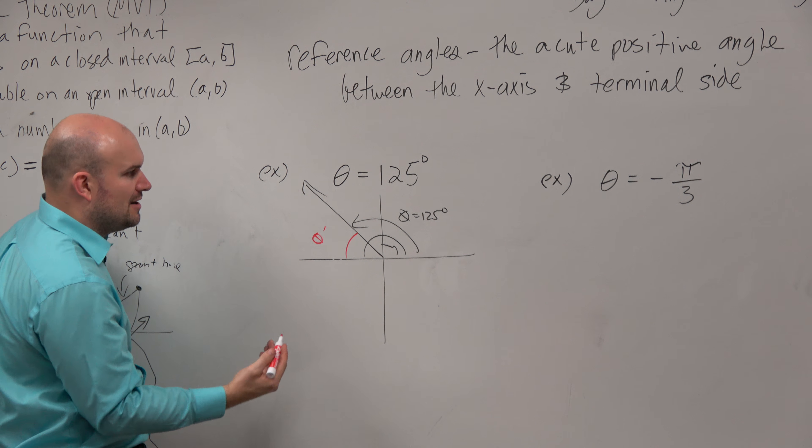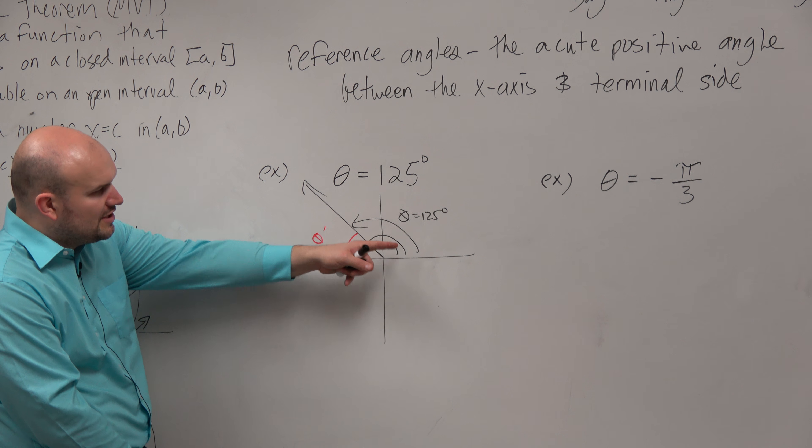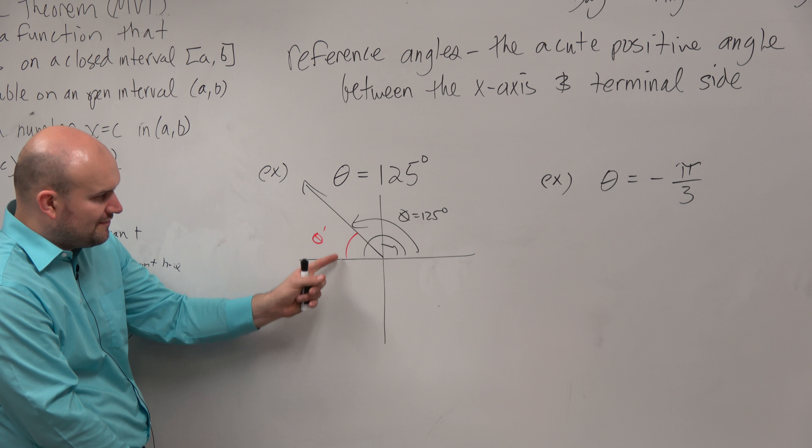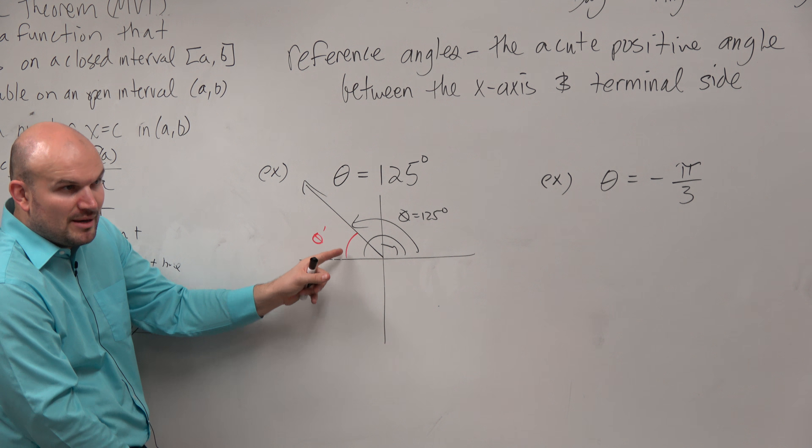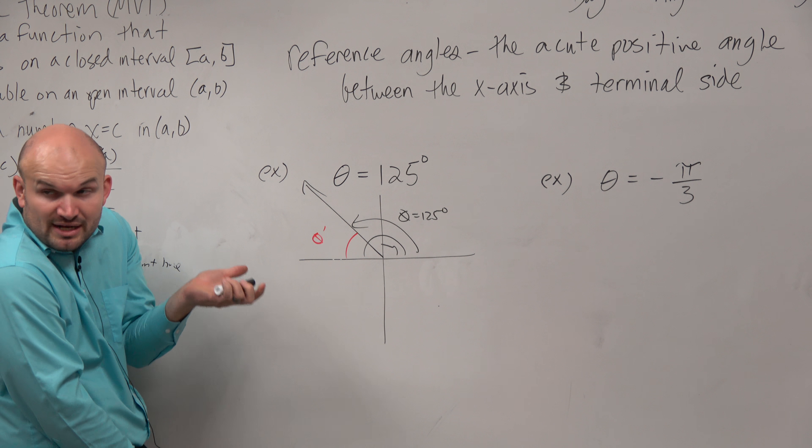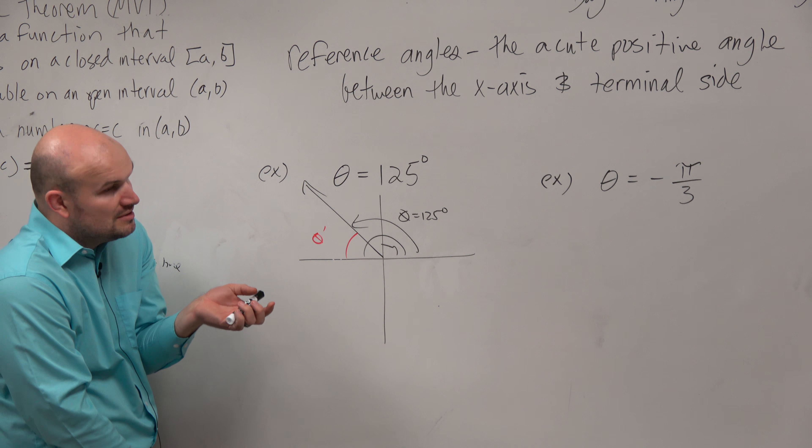So therefore, we could say theta prime. Now let's think about this. I mean we could give you examples, but if we go from here to here is 125 and I know that from here to here is 180, how far do I have to go to get to 180 if I'm at 125? All right, 180 minus 125, which is 55.